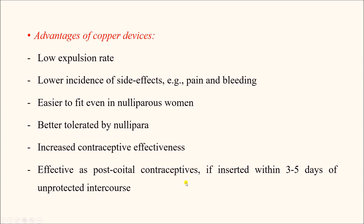The advantages of copper devices include low expulsion rate, lower incidence of side effects like pain and bleeding, and they are easier to fit even in uniparous women because of the smaller size. They are better tolerated by nulliparous women, have increased contraceptive effectiveness due to the metallic ion, and are effective as post-coital contraceptives if inserted within three to five days of unprotected intercourse.